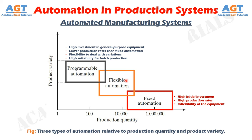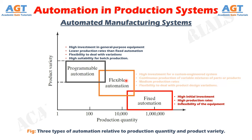Features of flexible automation include high investment for a custom engineered system, continuous production of variable mixtures of parts or products, medium production rates, and flexibility to deal with product design variations. Examples of flexible automation are flexible manufacturing systems that perform machining processes. We can see the three types of automation relative to production quantity and product variety that we have just discussed.